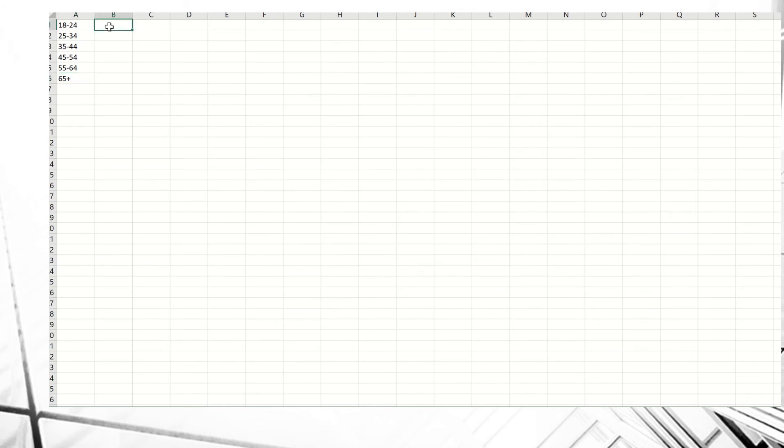And then in column B, I'm going to put those probabilities. So I've got 0.13, 0.18, 0.21, 0.19, 0.12, and 0.17.